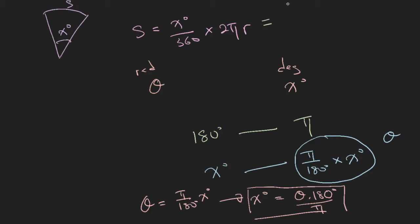So theta times 180 degrees over pi times 2 pi R. And then you mustn't forget the 360 degrees here, so divided by 360 degrees. So let's work this out.